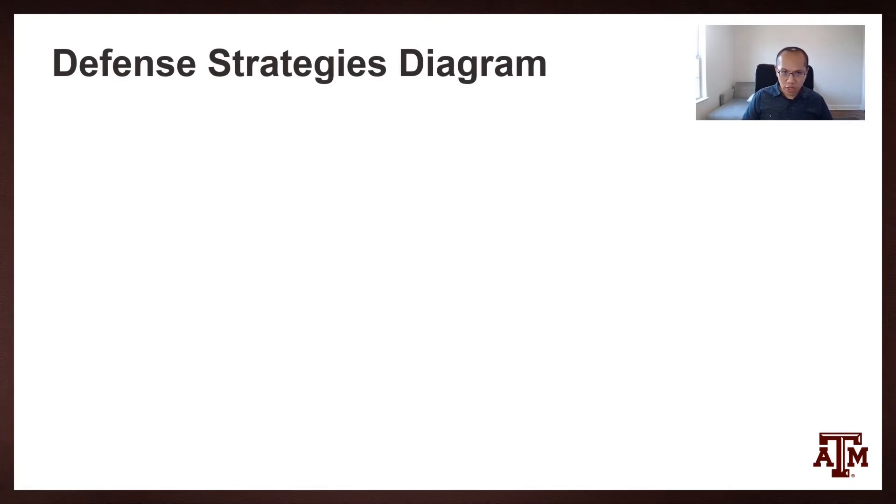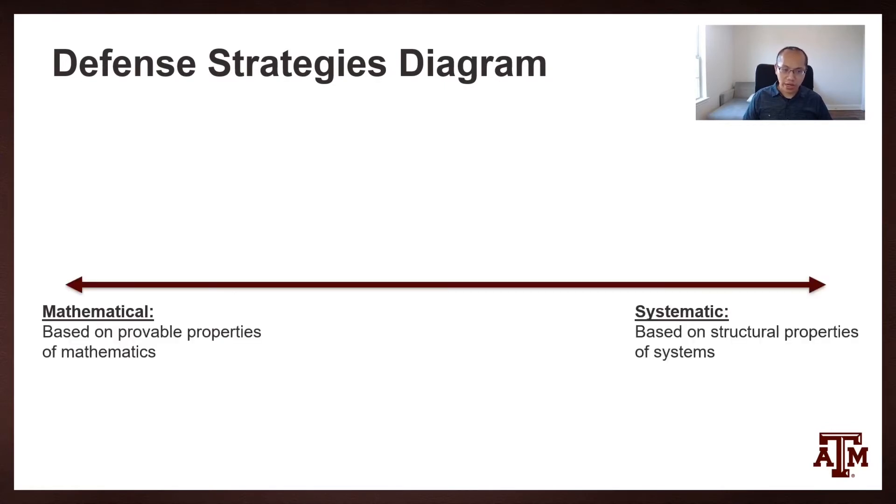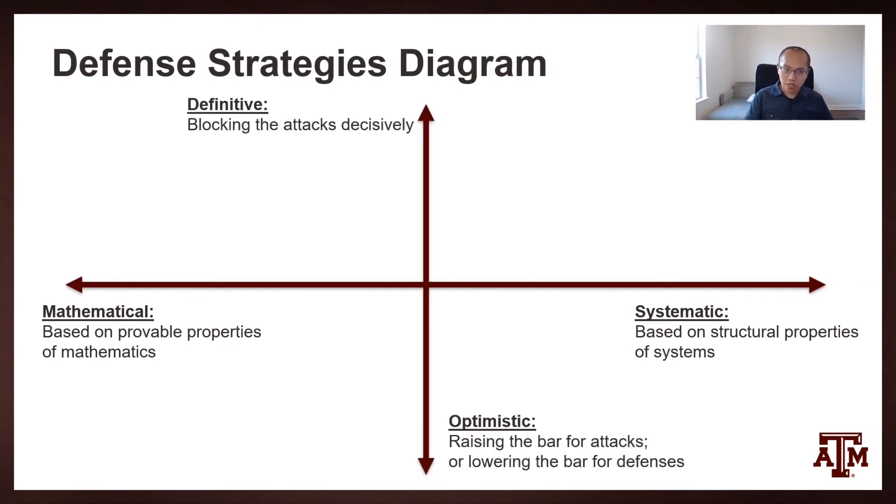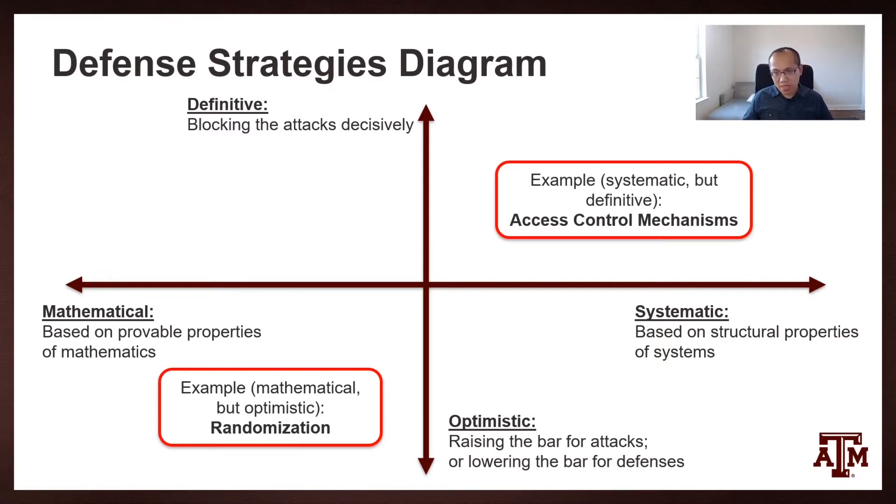When thinking about defense strategy, I would typically put them into a diagram like this. You can think about defense strategy based on whether they are based on provable properties of mathematics, or they could be based on structural properties of the system. On the other hand, you can also consider them either definitive, which means they are blocking the attackers decisively, or they could be optimistic, meaning they are simply raising the bar for attackers or lowering the bar for defenses. You can try to categorize all the defense strategies here. For example, you can consider randomization as a technique that's mathematical but optimistic. On the other hand, most of the access control mechanisms would be systematic because they are based on the structural designs of the system, but also definitive.